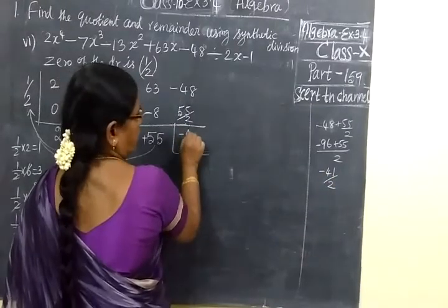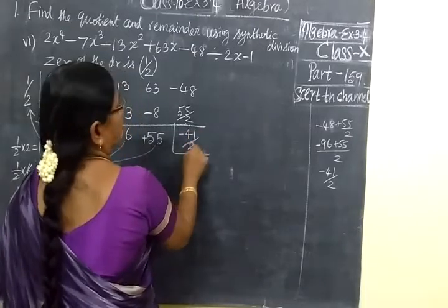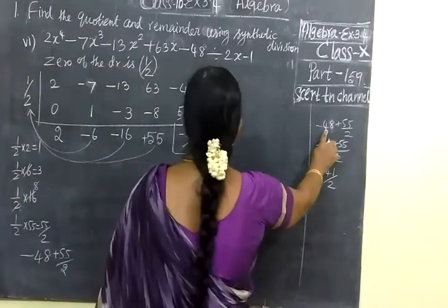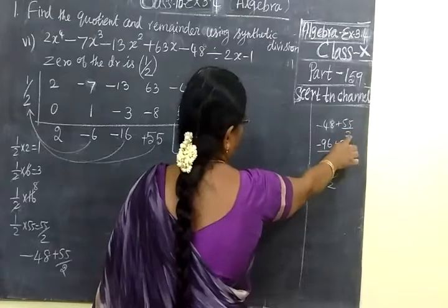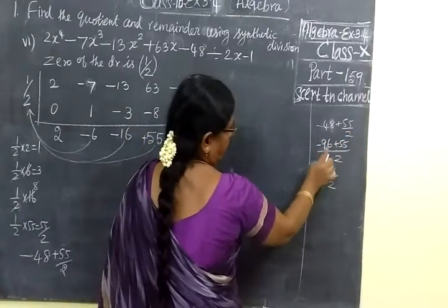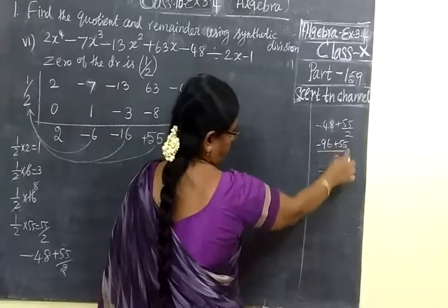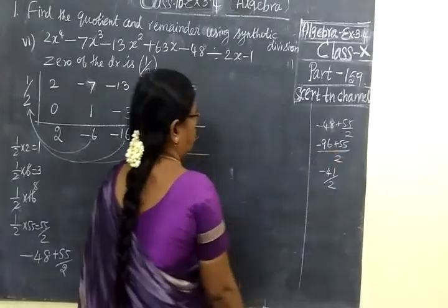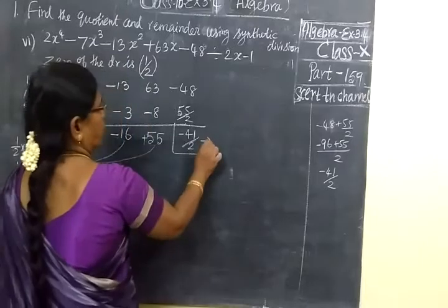So here you are writing minus 41/2. Minus 48 plus 55/2, LCM 2, cross multiply: minus 96 plus 55. 6 minus 5 is 1, 9 minus 5 is 4. Minus 41/2.